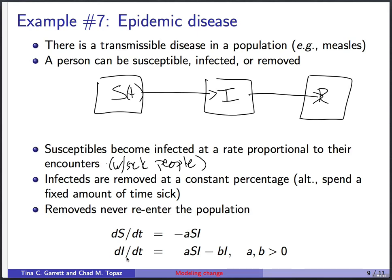We then write an equation for the infected: di/dt. The infected class increases when susceptibles get sick — the same term that appears with a minus sign in ds/dt appears with a plus sign here: plus a times s times i. At the same time, infected people are removed from the population at a constant percentage — like 3% getting better per day. So we subtract b times i, since this causes the infected count to decrease. So di/dt equals a s i minus b i, with a and b both greater than zero.